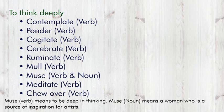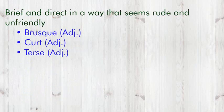Next word group: Brief and direct in a way that seems rude and unfriendly. Words are Brusque (Adjective), Curt (Adjective), and Terse (Adjective). Now friends, let's move to the next word group.